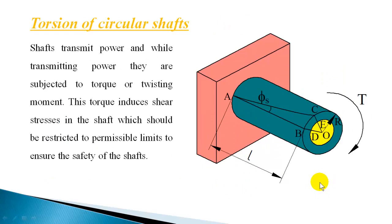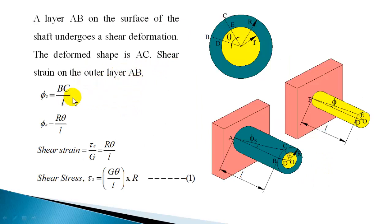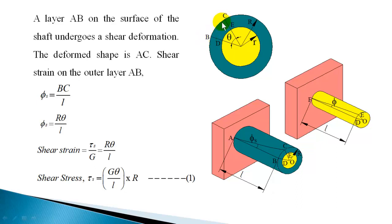Now let us calculate the shear strain on the surface. The shear strain on the outer layer AB is BC/L. So tan(phi) = BC/L, and since phi is small, phi_S = BC/L. The arc length BC can be calculated as R times theta, where theta is the angular rotation, as shown in the enlarged cross section. So BC = R*theta, and therefore phi_S = R*theta/L.